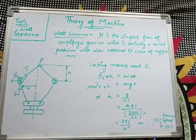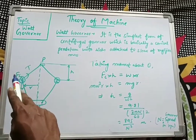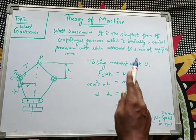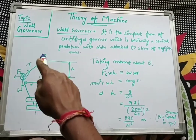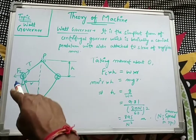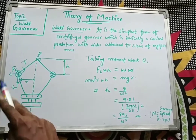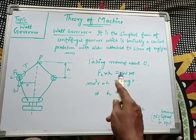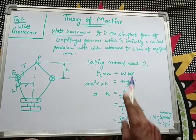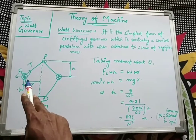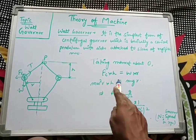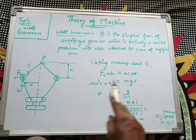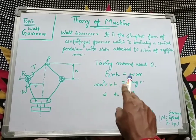For the centrifugal force Fc, the perpendicular distance is height h. For the self-weight W, the perpendicular distance is radius r. Since one moment is clockwise and the other is anticlockwise, if we write them on opposite sides of the equal sign both are positive. This gives us the equation: Fc × h = W × r.